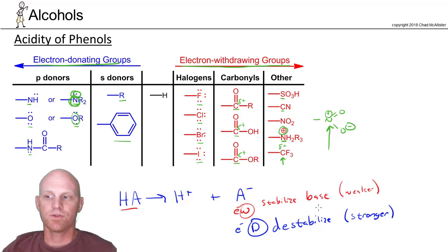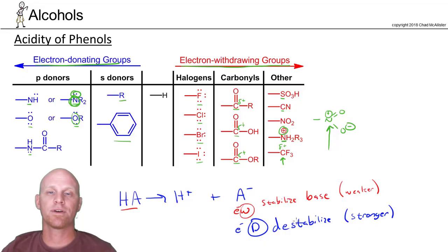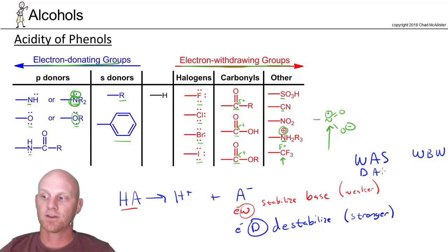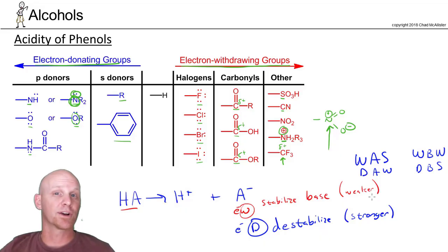This is a huge and important trend that we'll revisit throughout the course. Withdrawing groups make acids stronger and bases weaker. Donating groups make acids weaker and conjugate bases stronger. The underlying reason: a base is stronger when it has more electron density, so donating groups make it stronger and withdrawing groups make it weaker. Since a stronger base has a weaker conjugate acid — and a weaker base has a stronger conjugate acid — the effect on conjugate acids is the opposite.